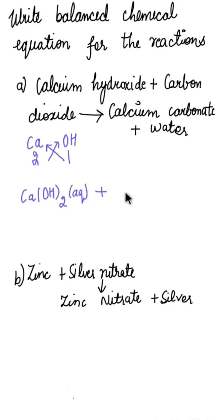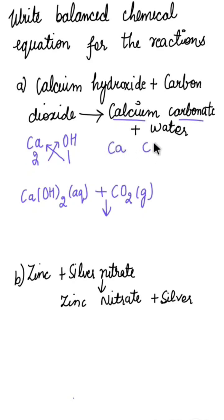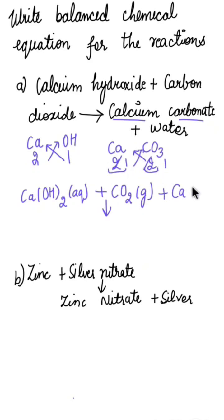Carbon dioxide is CO₂ and it is a gas, so we write (g) in the bracket for its state. After the arrow, calcium carbonate is formed. Calcium is Ca and carbonate is CO₃. The valency of calcium is 2 and carbonate is also 2, so they cancel, giving CaCO₃ as a solid. Water is also released as a liquid.